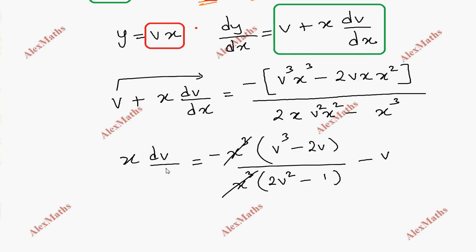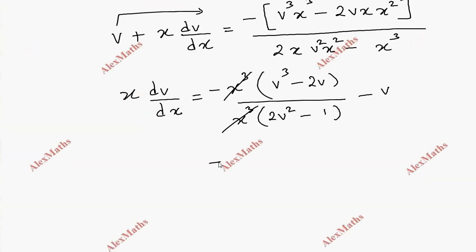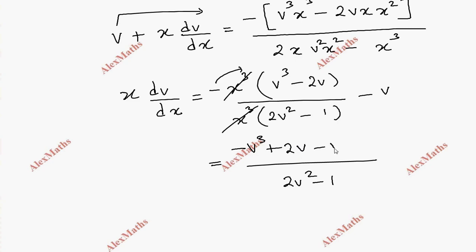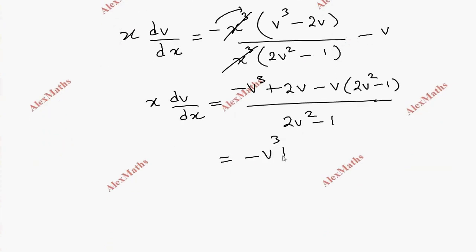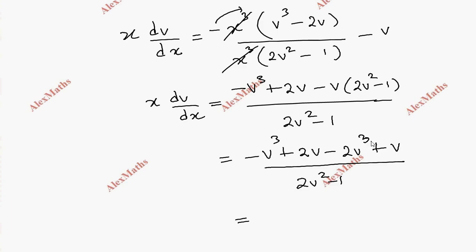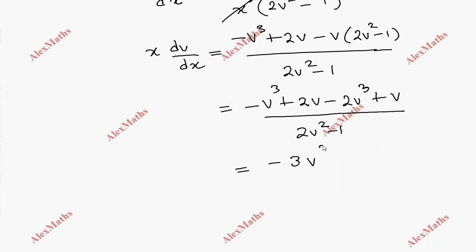x·dv/dx: now we take LCM, which is 2v² minus 1. This gives: minus v³ plus 2v, minus v(2v² minus 1), on the other side x·dv/dx as it is. So: minus v³ plus 2v, minus 2v³ plus v, all divided by 2v² minus 1. Combining like terms: minus 3v³ plus 3v, divided by 2v² minus 1. This equals x·dv/dx.